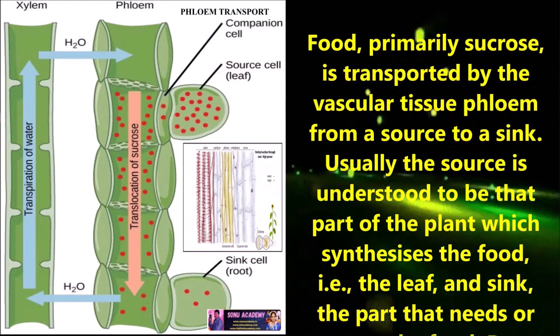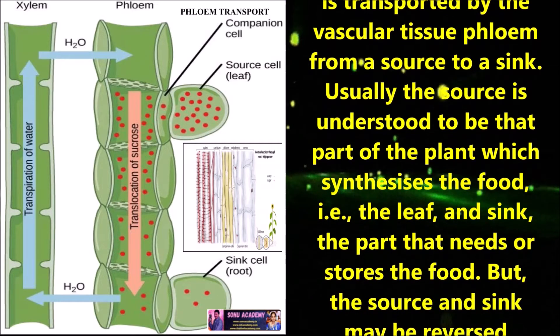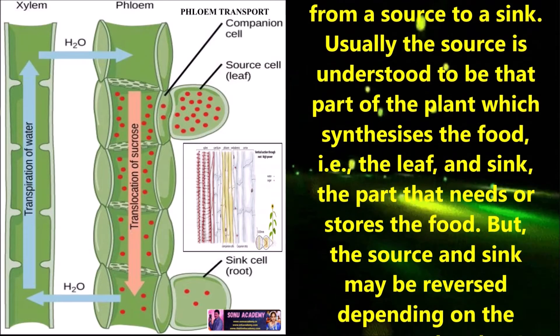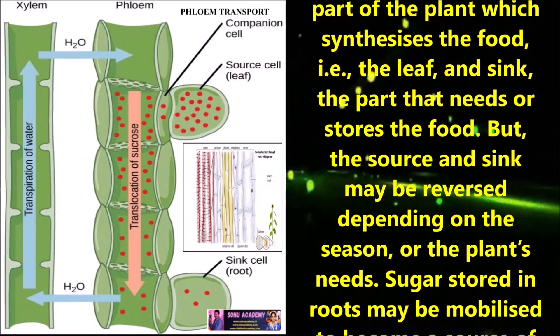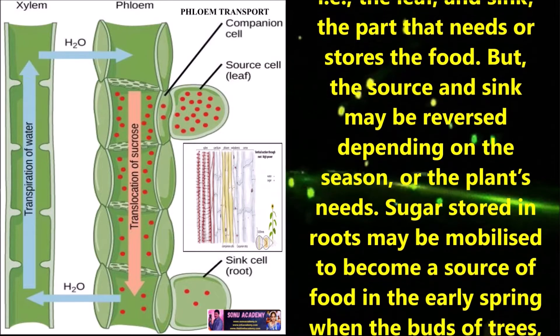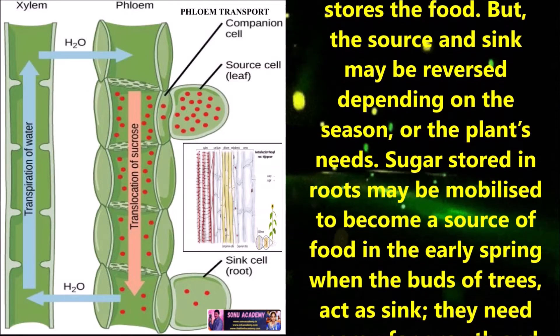Usually the source is understood to be that part of the plant which synthesizes the food, i.e. the leaf, and sink the part that needs or stores the food. But the source and sink may be reversed depending on the season or the plant's needs.